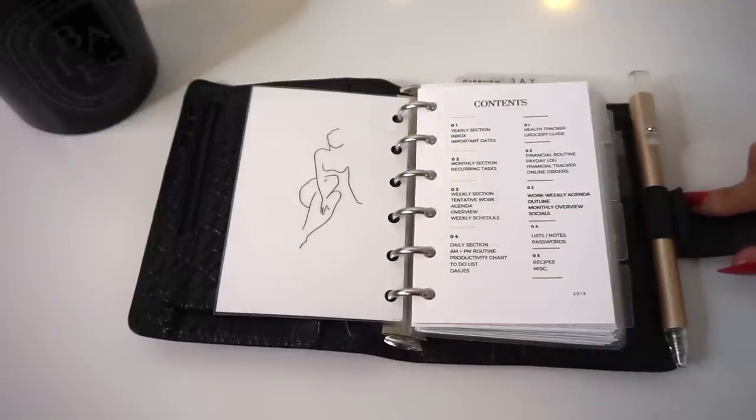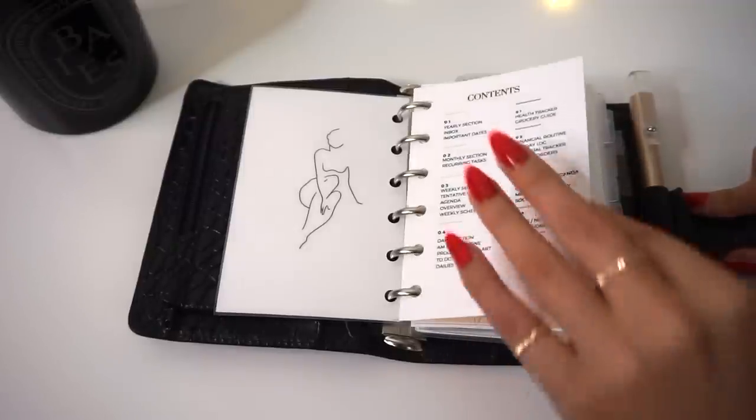I don't use all of this stuff on a daily basis. A lot of it is things that I visit maybe once a week or once a month, such as like financial stuff. I don't go in there every single day and write down everything I spend because I have online banking and it shows me everything. But it is nice to have a little outline of what's actually in here.